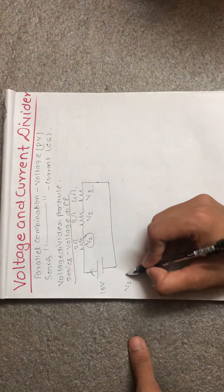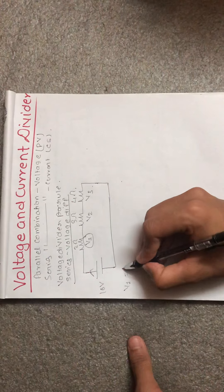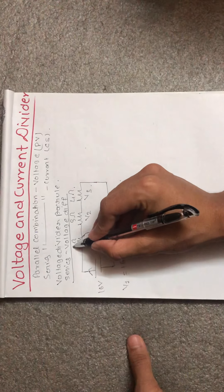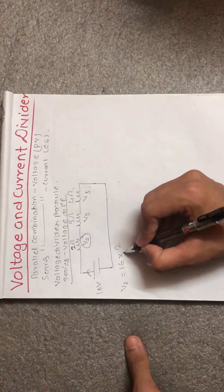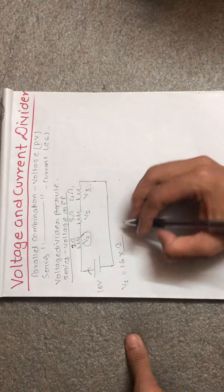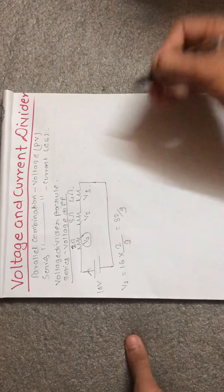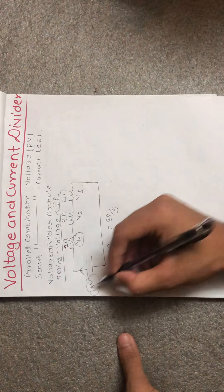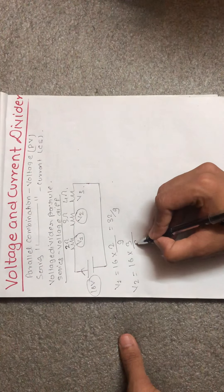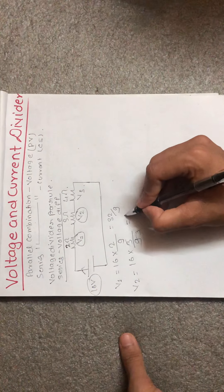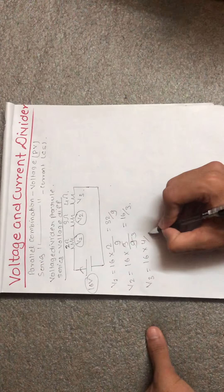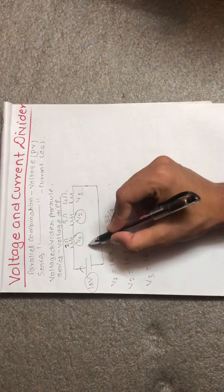Using the voltage divider rule: V1 equals total voltage multiplied by R1 over total resistance. R1 is 2 ohm and total resistance is 2+3+4 = 9 ohm, so V1 = total voltage × 2/9, which gives 32/9. Similarly, V2 equals total voltage × R2 over total resistance = 16 × 3/9, which gives 16 × 3/9.